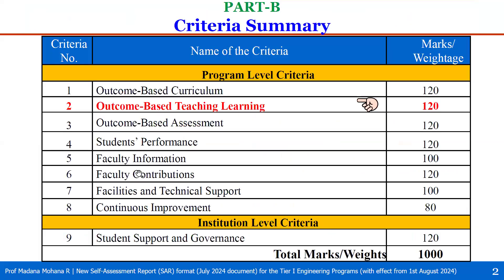This is the overview of all the nine criteria in Tier 1 engineering institutions as per the revised manual, which will be commenced from 1st August 2024. We discussed Criterion 1 — Outcome-based Curriculum, which carries 120 weightage. Now we will see Criterion 2, Outcome-based Teaching Learning. The weightage is 120.